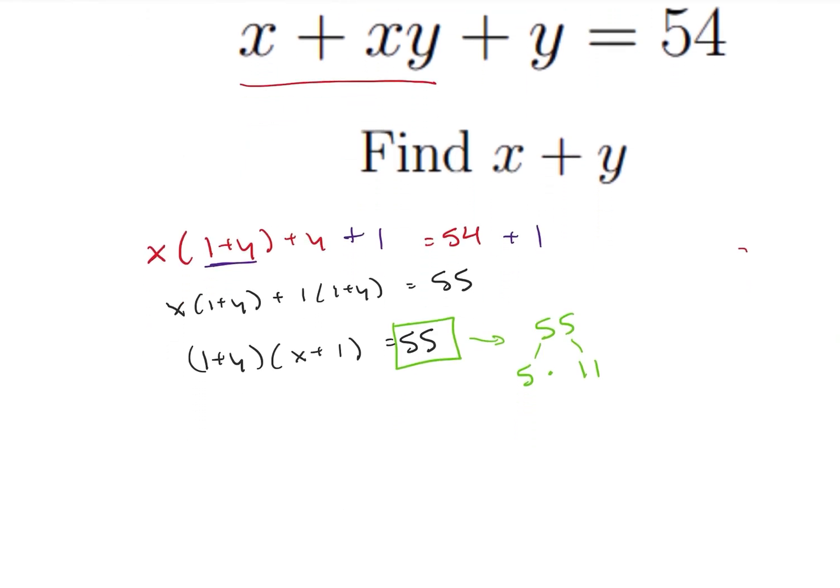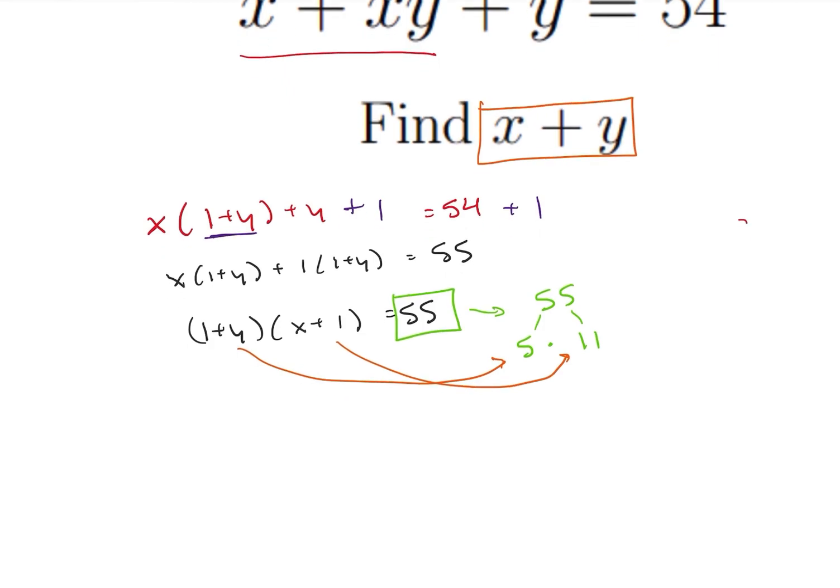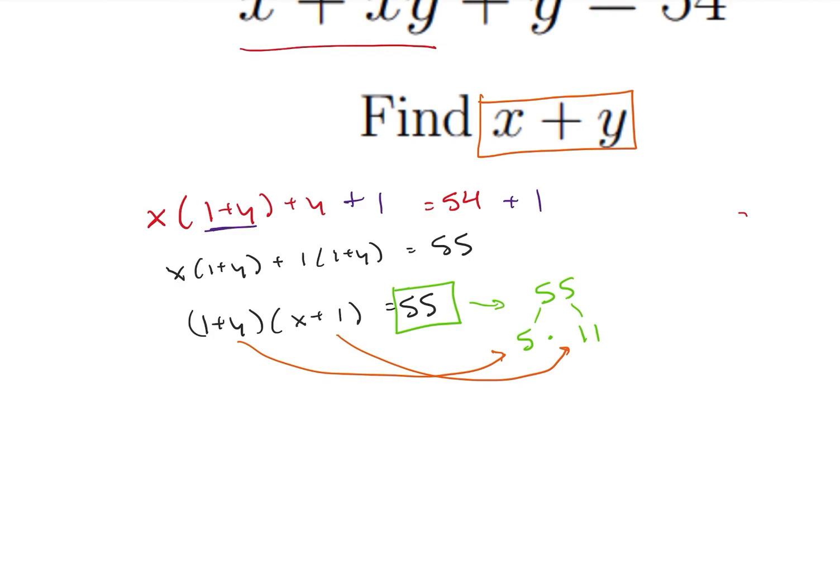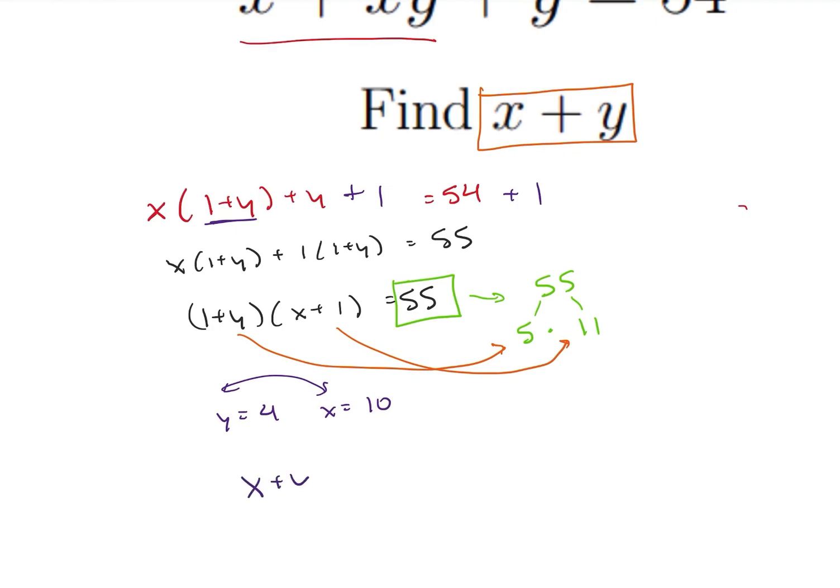So what that means is that either 1 plus x or 1 plus y is going to be equal to each one of these. And since what I'm finding is x plus y, I can kind of choose either one to be whichever. So if I choose y to be 4 and x to be 10, and obviously I could have swapped those and that would have been fine, then I can see that x plus y is going to be equal to 14. And that's going to be my final solution.